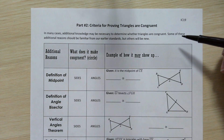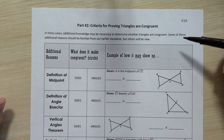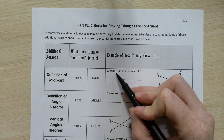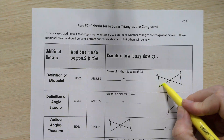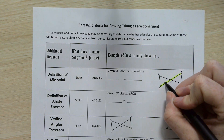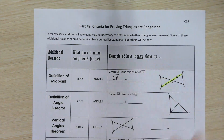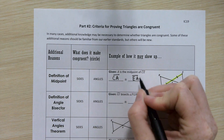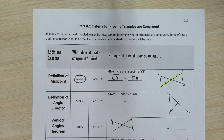That additional information will tell us about either congruent side pairs or congruent angle pairs. The definition of midpoint is something we've been using since standard one. If A is the midpoint of segment CE, we would mark that segment CA is congruent to segment EA — an additional pair of sides we wouldn't know about without that given information.